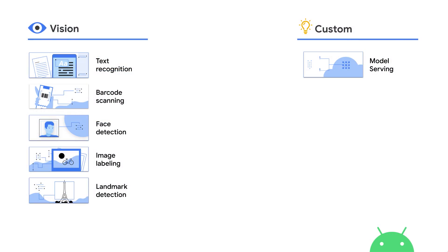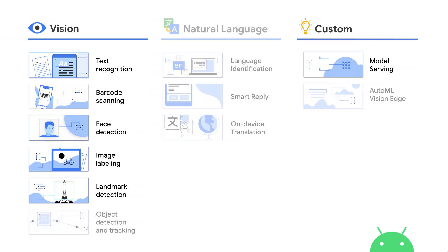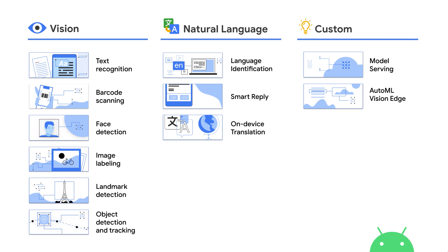Let's recap ML Kit's offerings. Back in 2018, ML Kit released a set of vision-based features and a custom model serving service, which can download or update custom models dynamically without updating your app. Until this I/O, we released a new set of features for natural language processing. We also extended with AutoML Vision Edge for custom model training, enabling developers who have data but lack expertise to train their own models.